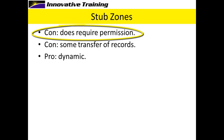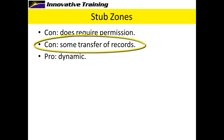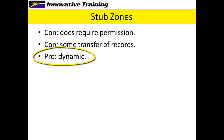Stub zones are exactly the opposite. A con is that they do require permission — I need the person at that zone to give me permission to have a copy, even if it's just a stub zone with a very small fraction of the records. Since there are some records, there is some traffic and transfer of records going back and forth. But the pro is that it's dynamic — if any of the DNS servers at the other company update their records, my servers will immediately get the change because they have a copy of the zone.